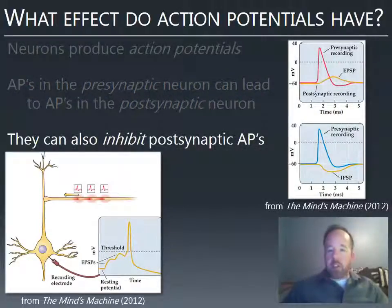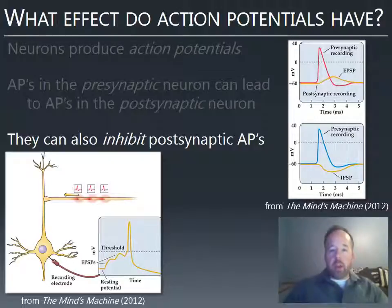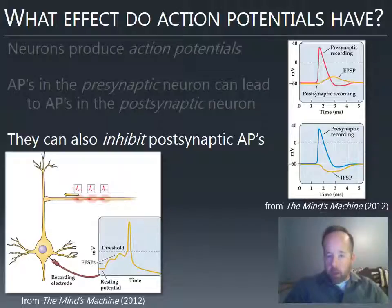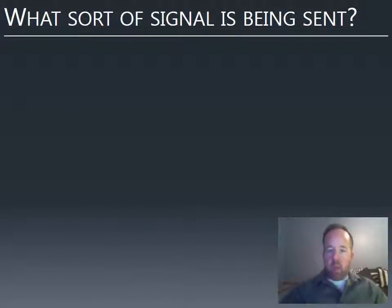To make things a little more complicated, it's not always the case that an action potential from neuron one makes neuron two more likely to fire. It can actually make it less likely — we call that inhibition. So an action potential from neuron one can excite neuron two, making it more likely to fire, or it can inhibit neuron two, making it less likely to fire.